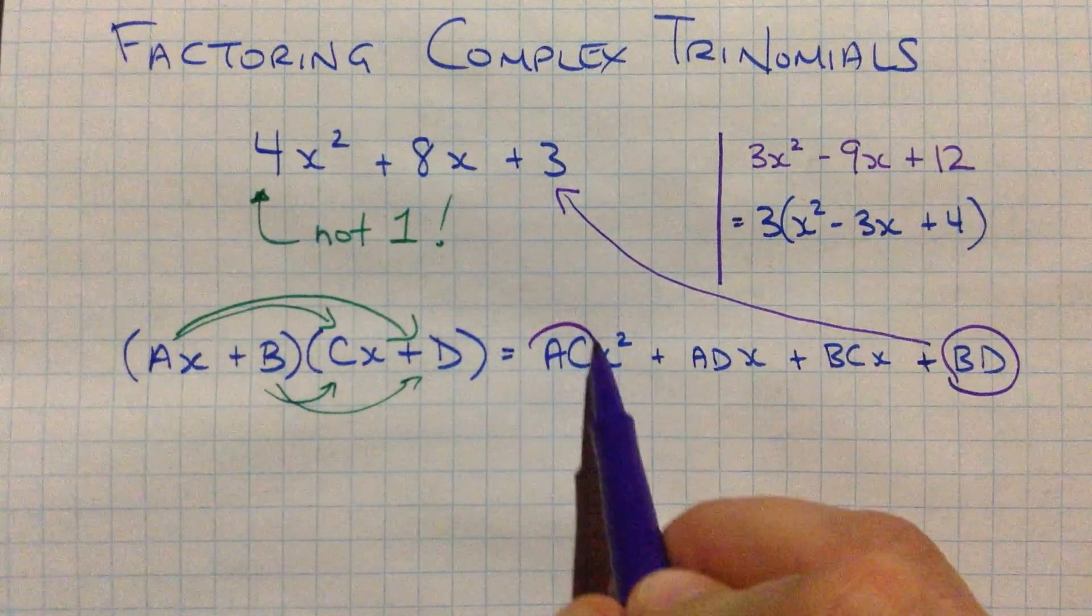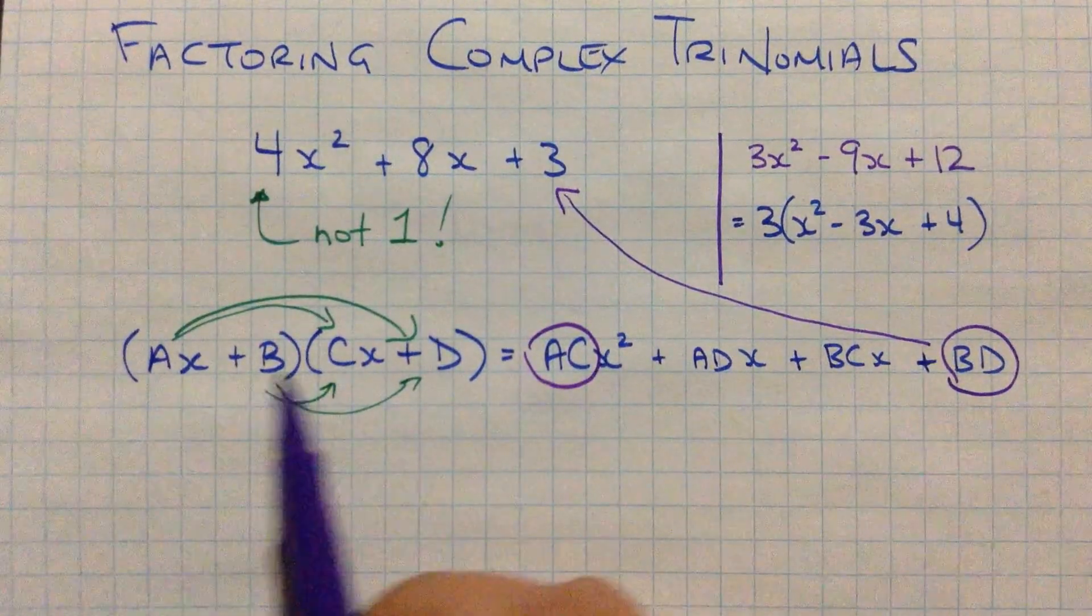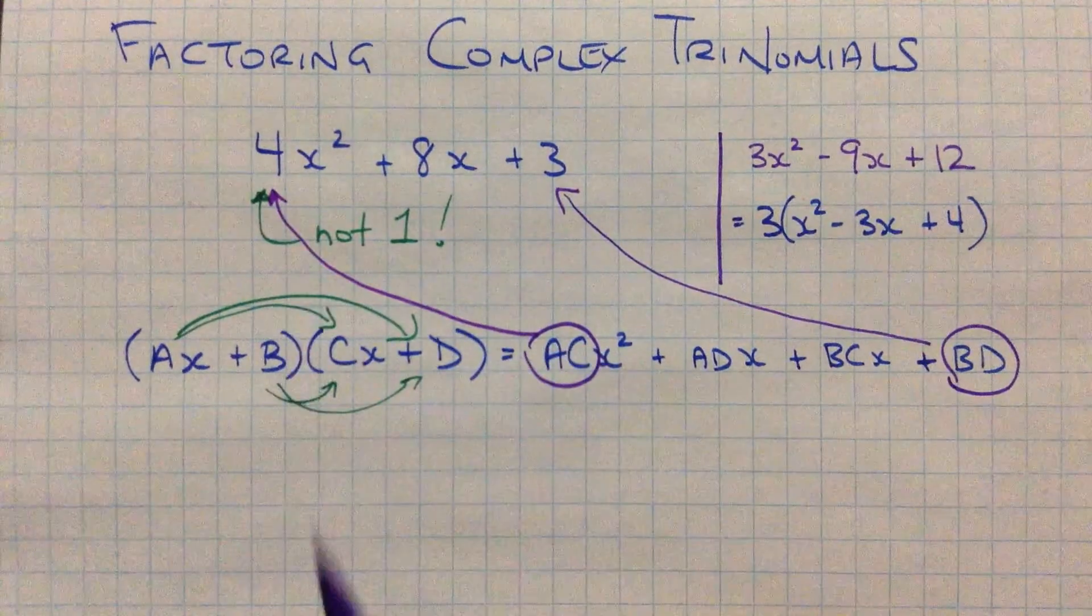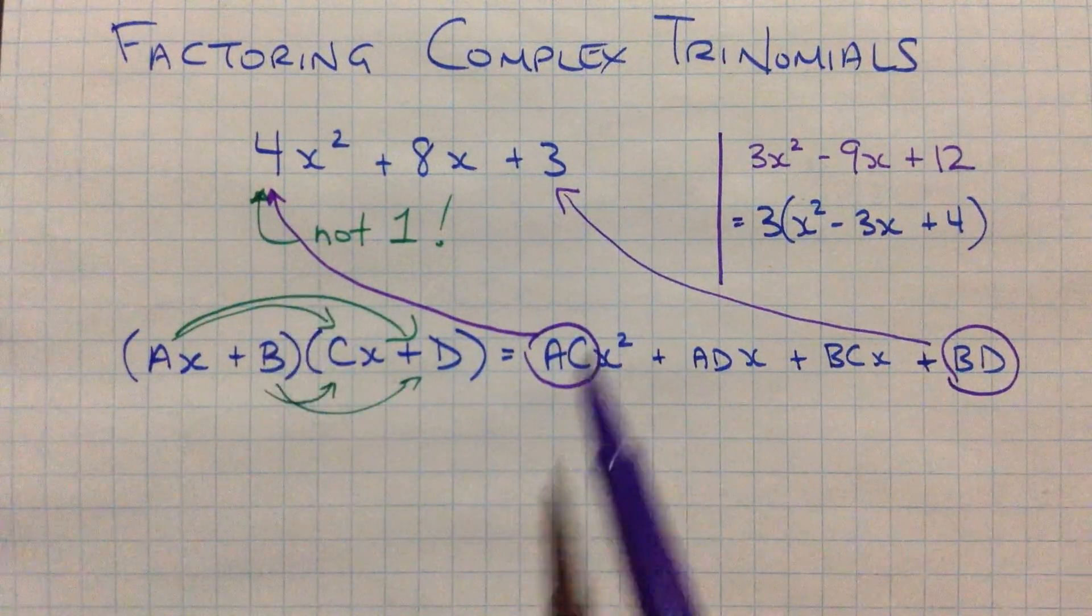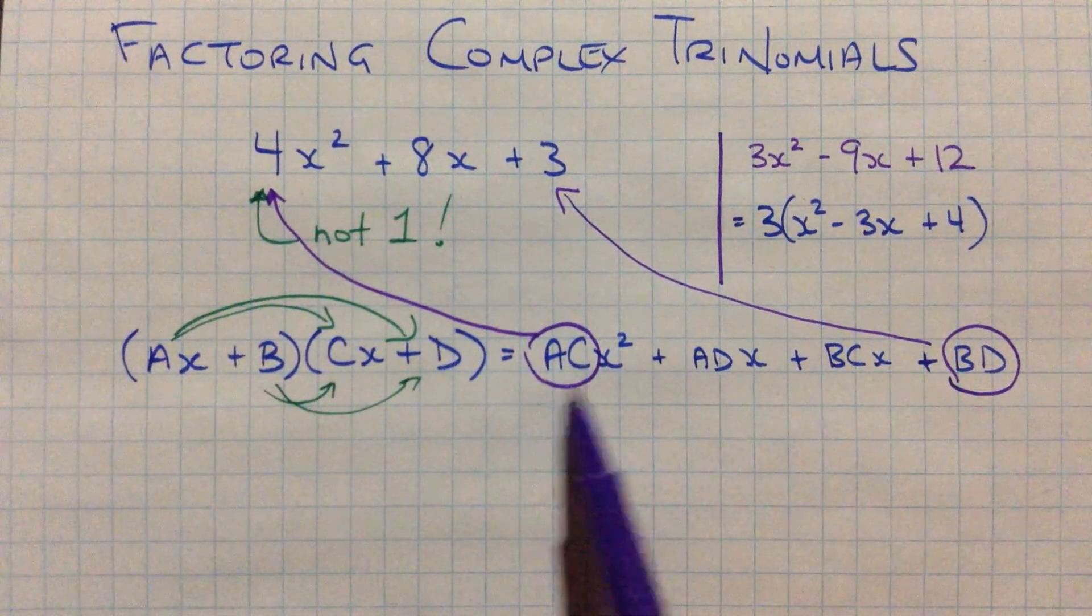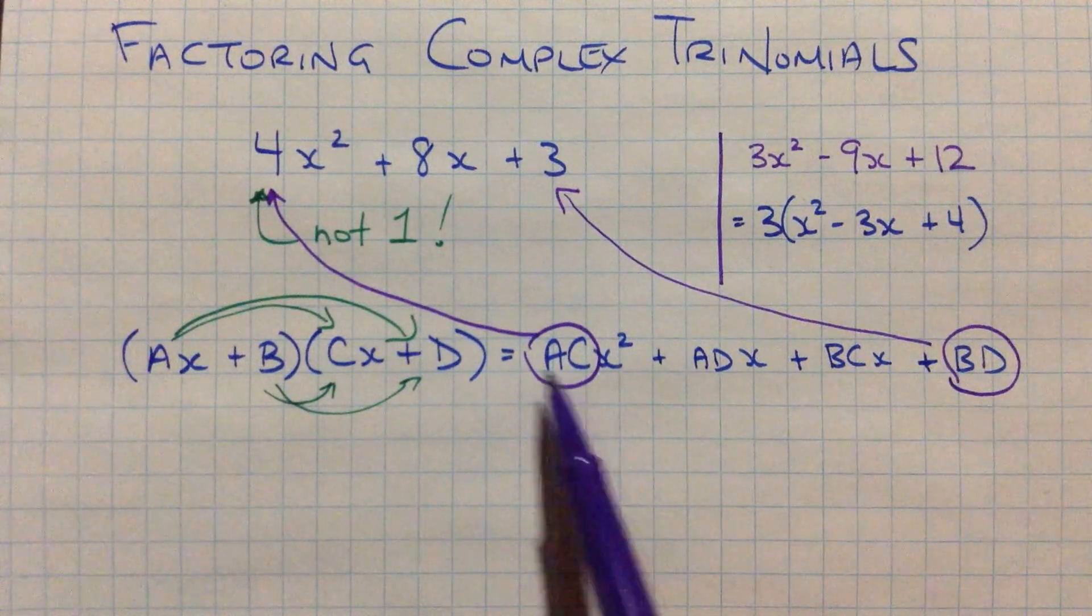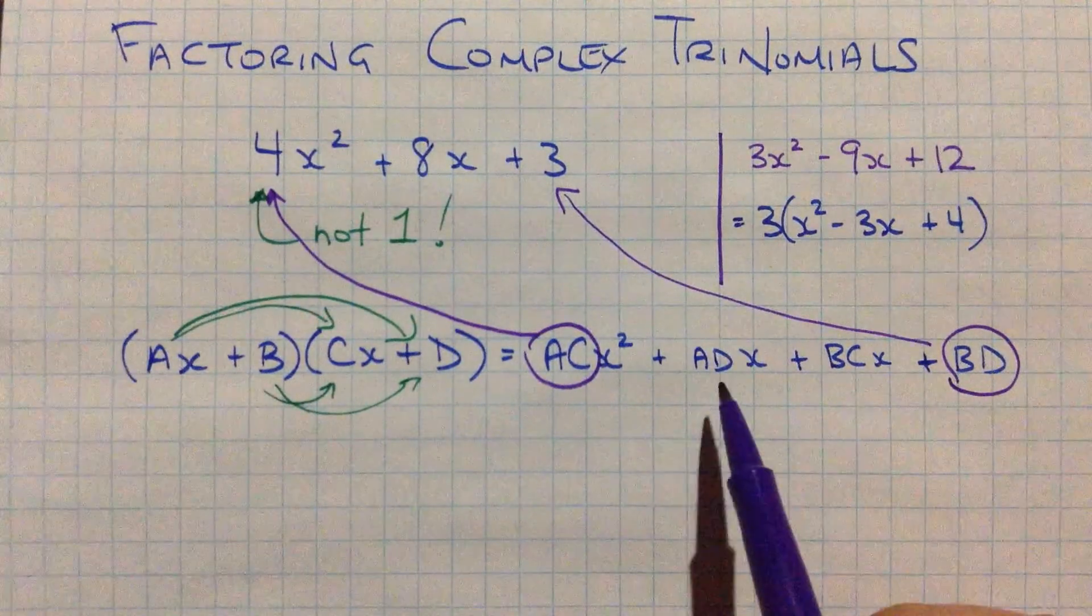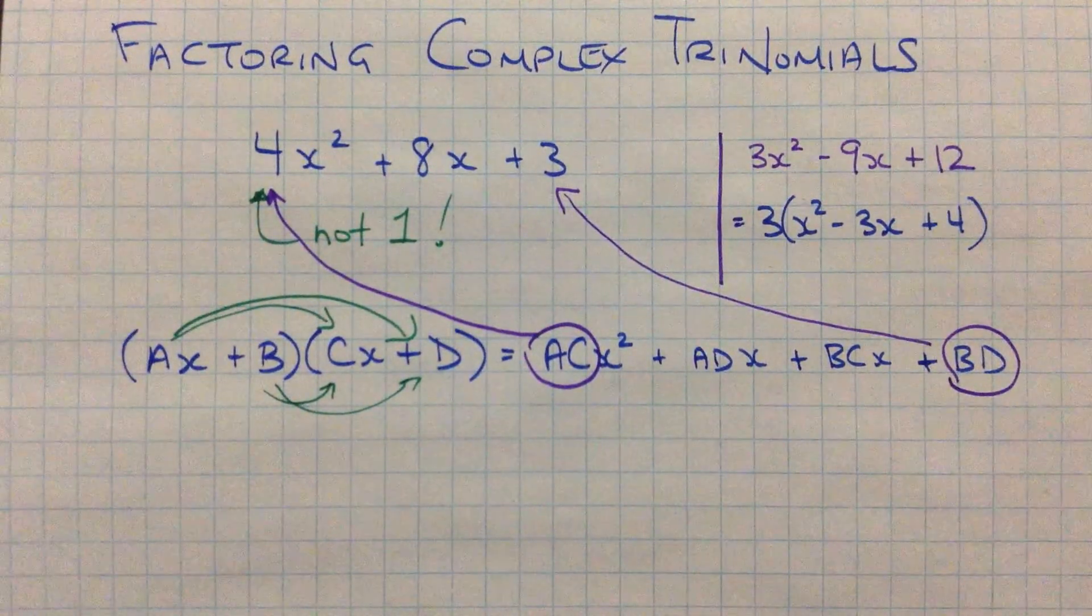Alright, that one's not too bad. a times c, those are a and c, those are going to multiply together to give me that first coefficient, the complex, the thing that makes this complex. So one of these numbers at least won't be 1. a or c or both will be something other than 1. Okay, now these middle two, these are the interesting ones.